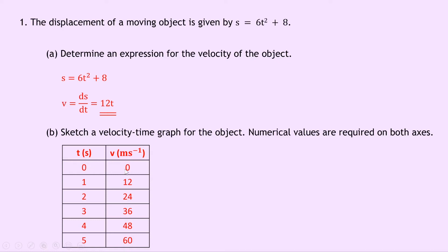So for example if we substitute t equals 0 into this expression 12t then we get v equals 0, so that gives us 0, 0. If we plug in t equals 1 then we get v equals 12, so that gives us 12 over here. For t equals 2 we get v equals 12 times 2 which is 24 and so on.